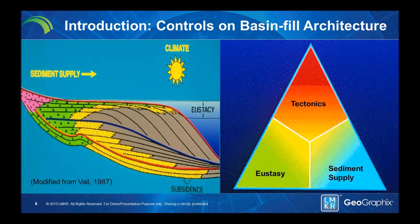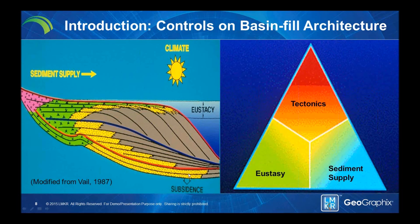Let's look at our controls on basin fill architecture. On the triangle diagram you can see sediment supply, tectonics, and sea level. Tectonics is typically the rate at which the basin is subsiding. Sea level is a rise or fall in base level that occurs typically in response to climate and glacioeustasy — especially in the Pennsylvanian models we're using today — but also applies to Mesozoic examples, where sea level was a smaller and slower rise and fall, making subsidence and tectonics a more important component. What ultimately fills the basin and gives us our reservoir is sediment supply. Subsidence and sea level change are what allow us to deposit and preserve that reservoir.